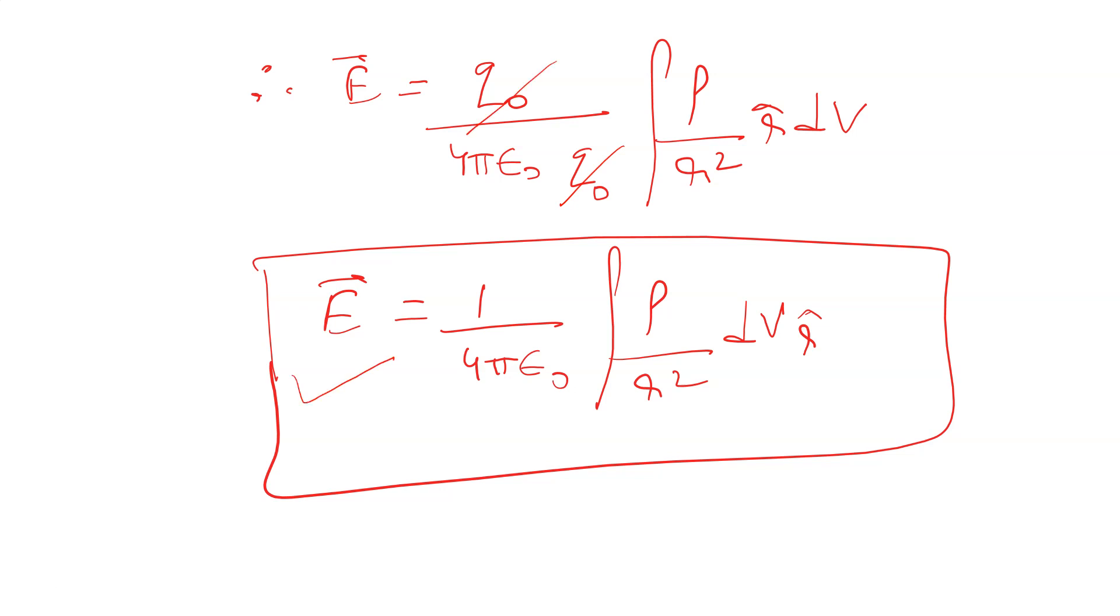E equals one by 4πε₀ integral of rho by r² dv r-cap. This is the electric field intensity due to volume charge distribution. Thank you, thanks a lot.